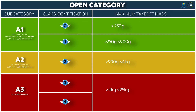To legally fly in the EU you are required to register yourself as a drone operator and complete some training. For example, the DJI Mini 4 Pro is below 250 grams, so its class identification is C0. It is not a toy — toys have no class identification. For a C0 drone, you must register as a drone operator but are not required to complete any training.